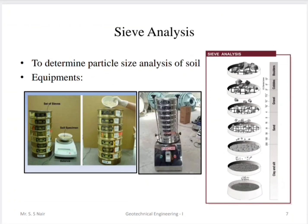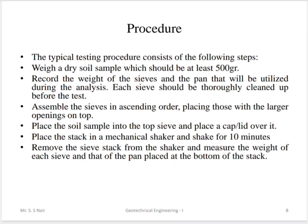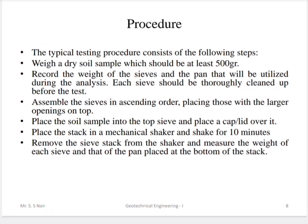In sieve analysis, the finer sieve is at the bottom and the coarser sieve is at the top. The procedure: first, weigh a dry soil sample of at least 500 grams. Record the weight of each sieve and pan. Clean all sieves before the test. Assemble the sieves in ascending order with the larger sieve at the top. Place the soil sample into the top sieve and place the lid.